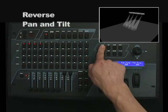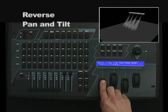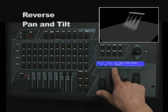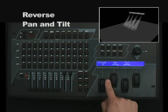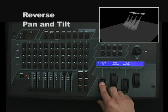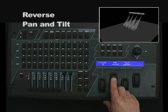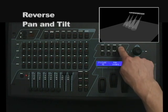I'll now invert two of the fixture's pan settings so that we get a crossing motion. To do so, press the menu, then use data wheel 1 to scroll to the pan and tilt invert option. Once you're there, press enter. Fixture number one has its pan and tilt set to normal — this is the default setting for all selected fixtures. I'll use data wheel 2 to change the pan setting for fixture 2 to invert, then press enter.